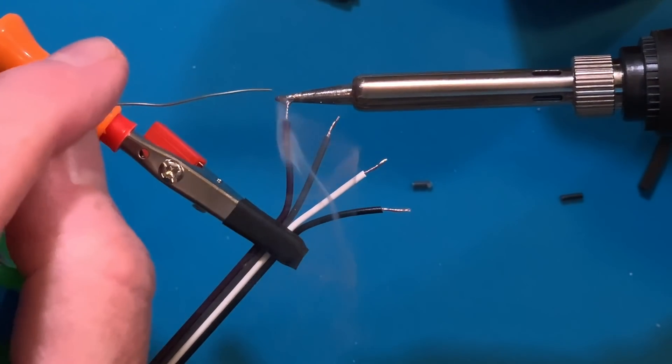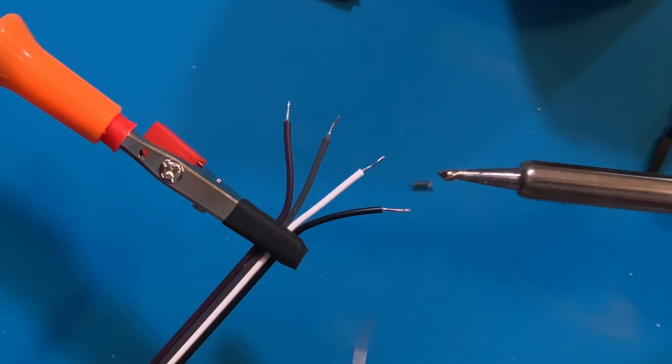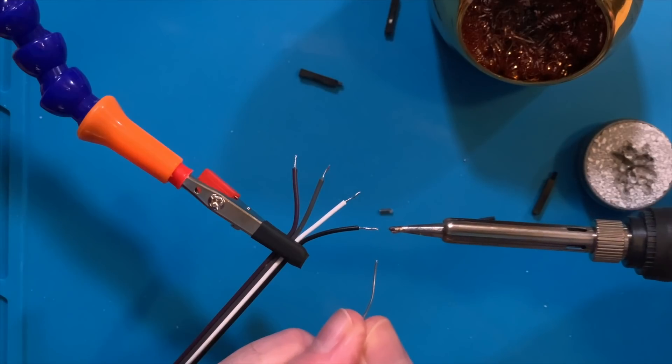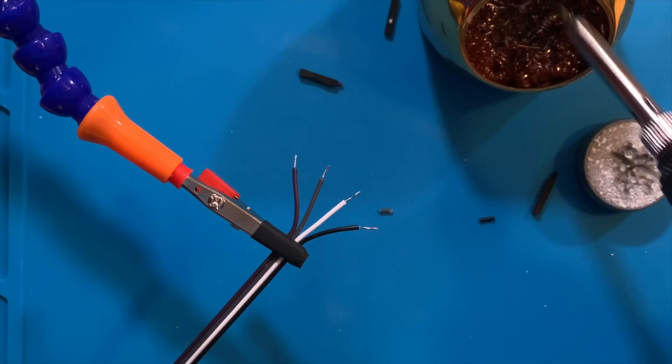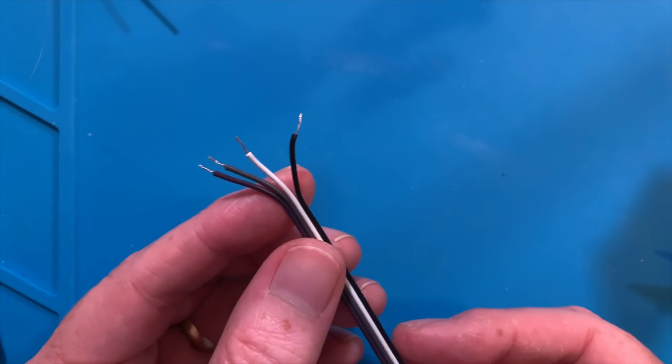Give the end of each wire a little twist to keep the strands together. Then, with a hot soldering iron, tin the end of each of those wires, the four from the ribbon cable and the end of the red one. Tinning will keep the strands of each wire together, and by having solder already on the wires, it'll make it easier to solder them to the accelerometer.